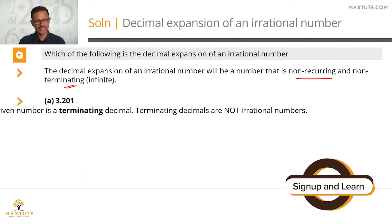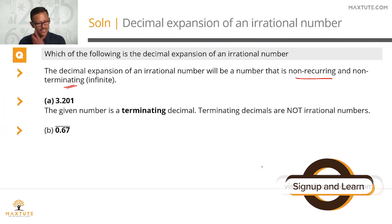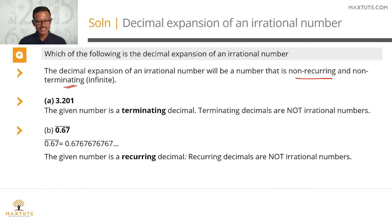3.201 is terminating, so therefore it is not irrational. The second one, 0.67 with the bar on top, means this number is recurring. It's non-terminating but it is recurring. Therefore, it is not an irrational number.